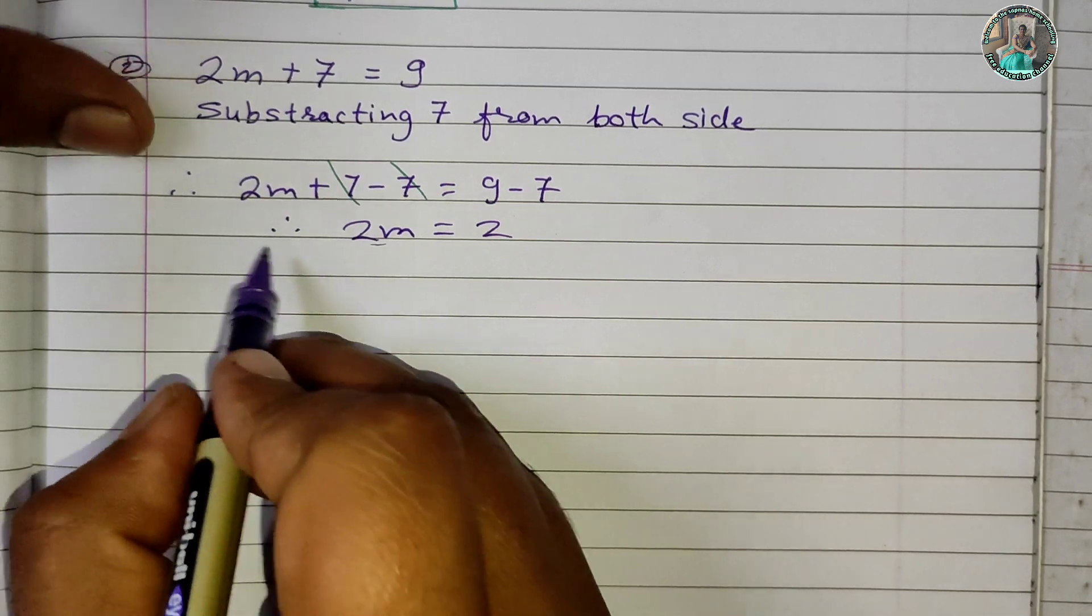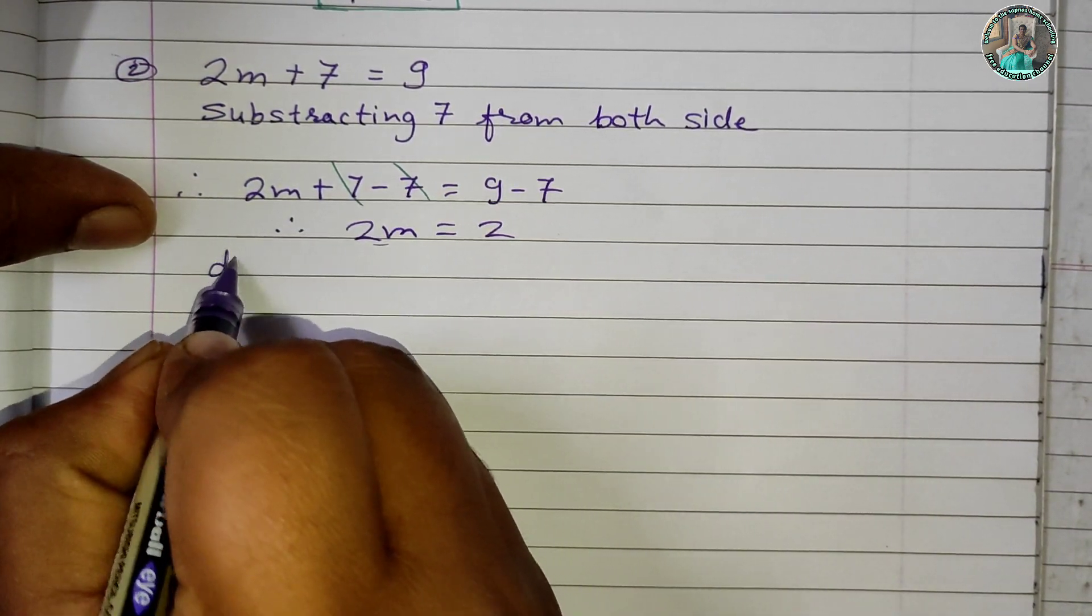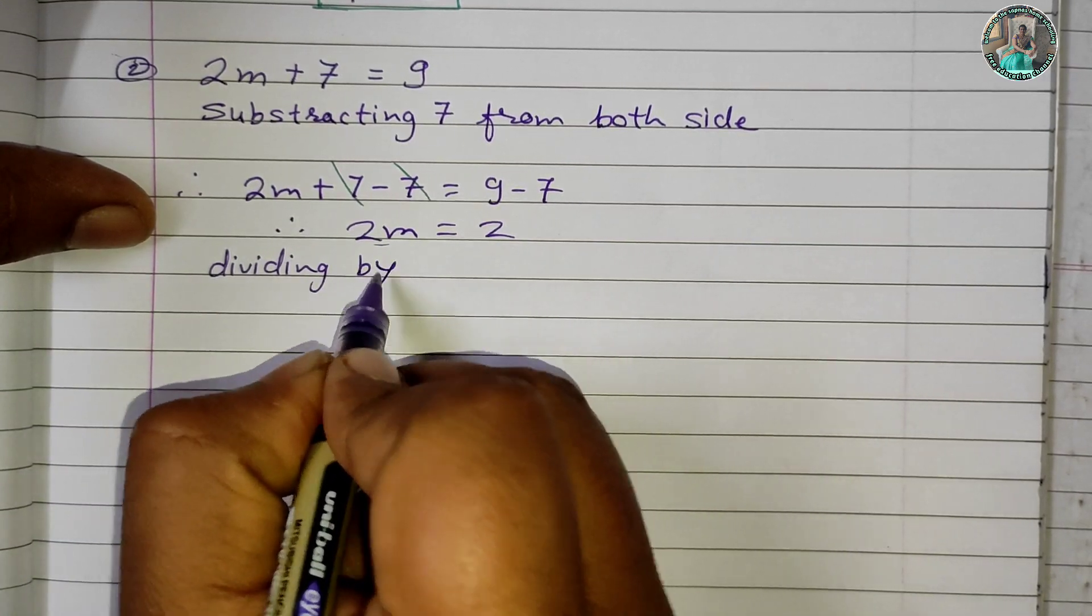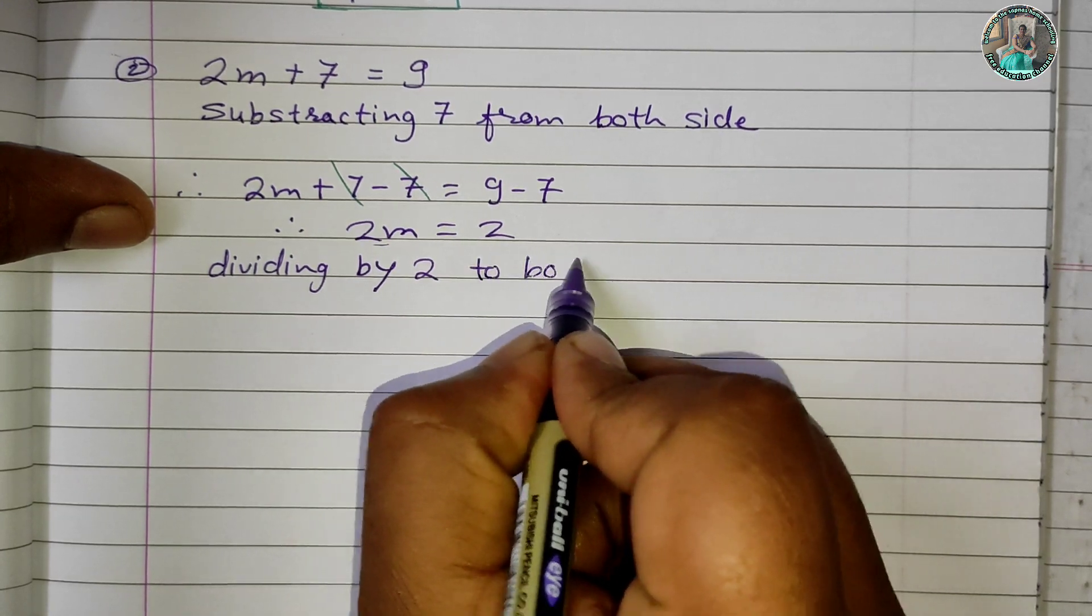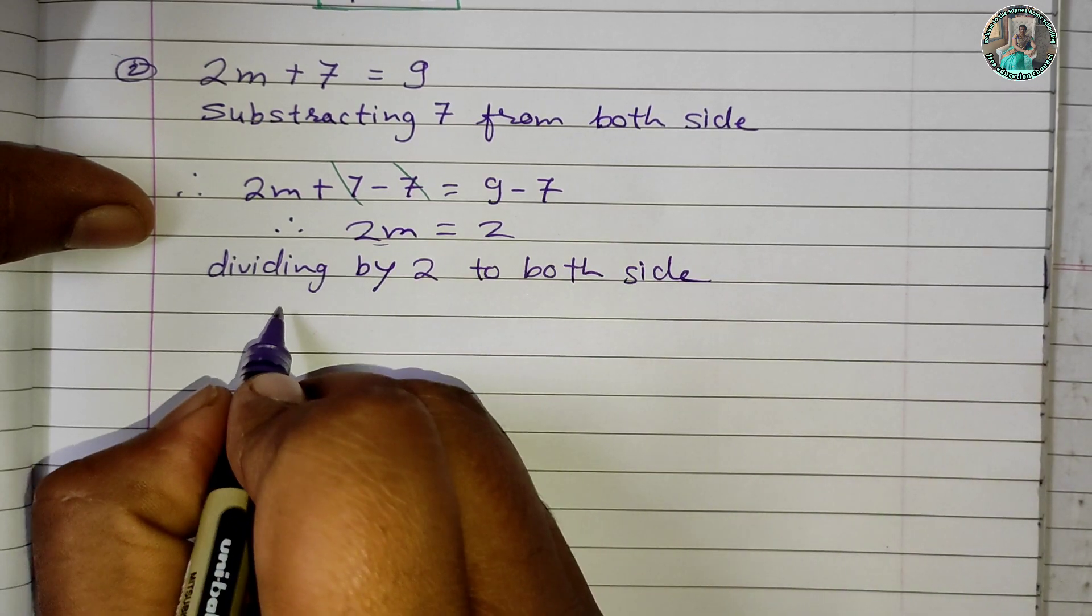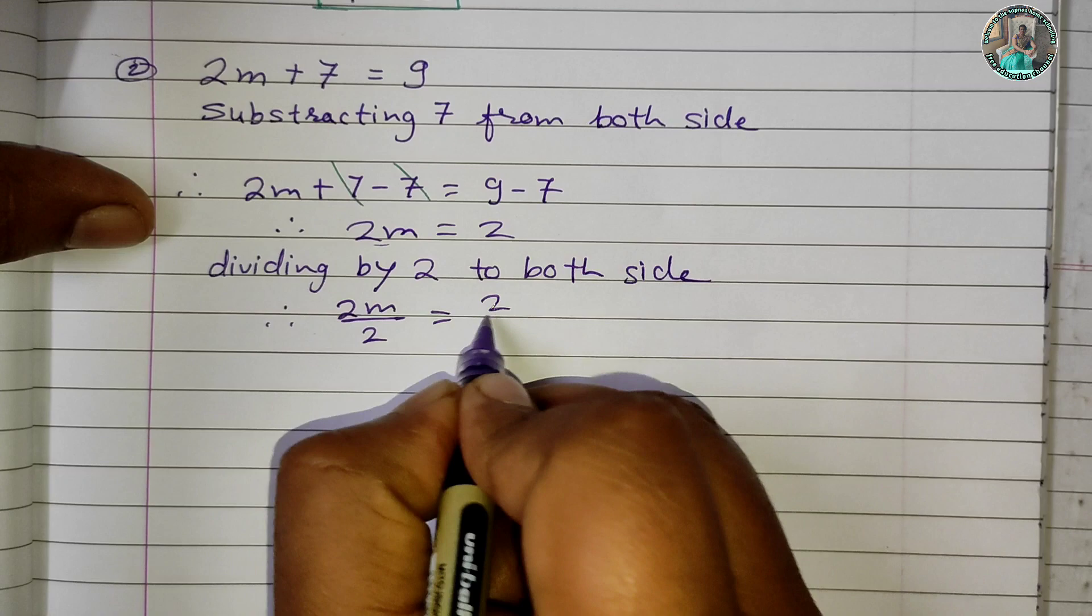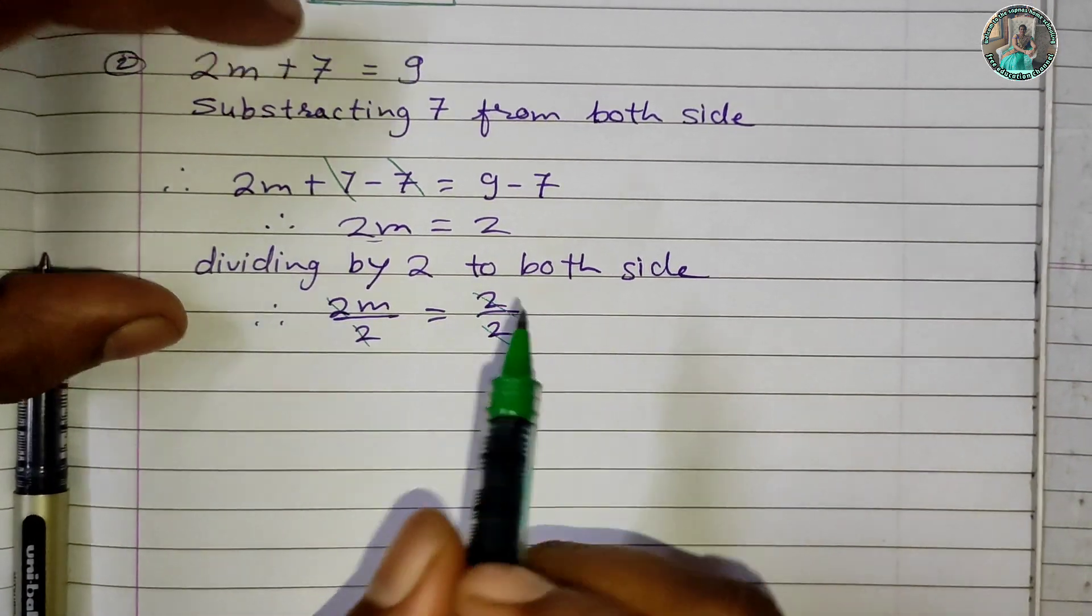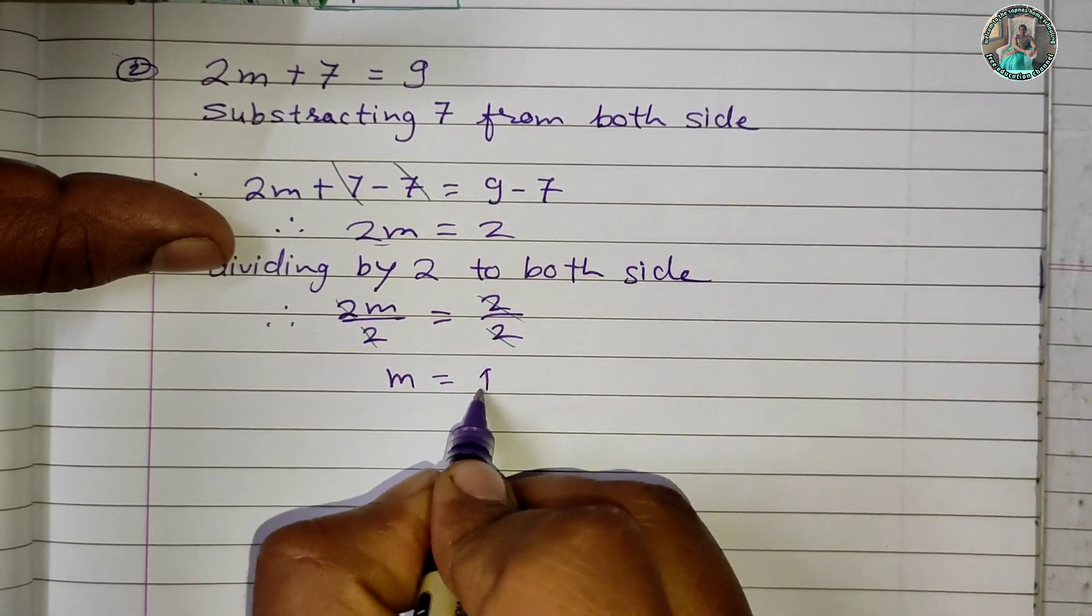Dividing by 2 to both sides: 2m/2 = 2/2. Therefore, m = 1. This is the solution of equation 2.